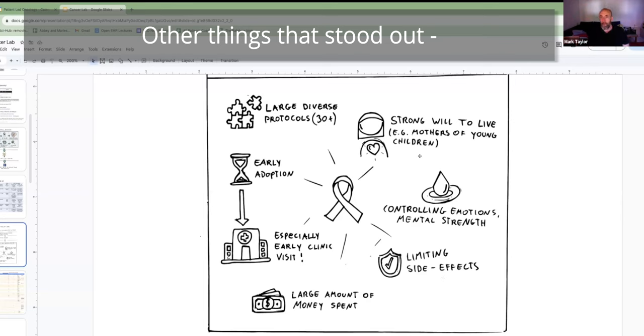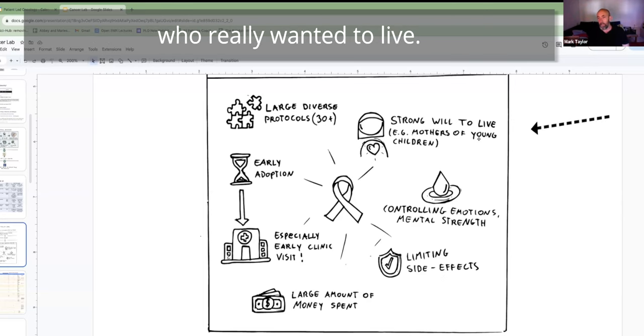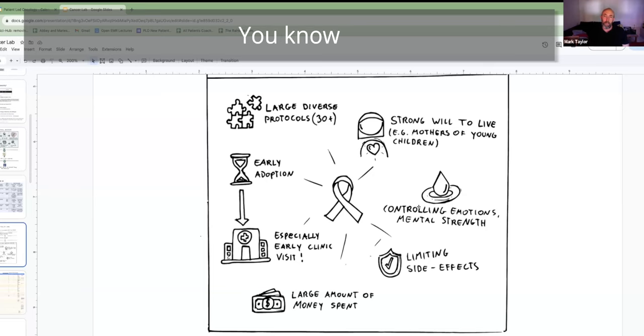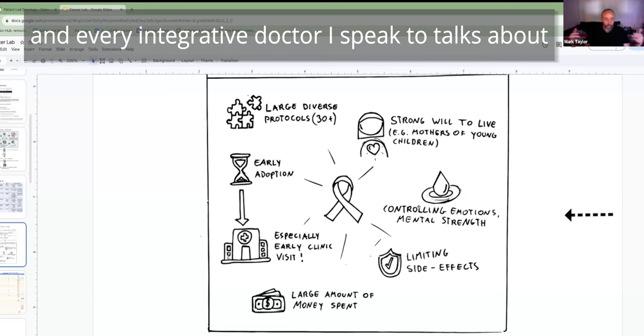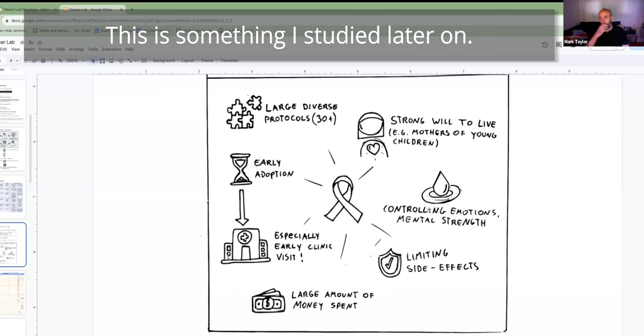Other things that stood out: there was a clear correlation of people who really wanted to live, particularly mothers of young children. You'd see the determination in the patients. This is very difficult with cancer, it's very evident. And every integrative doctor I speak to talks about the apparent impact of someone's emotions on their outcomes. This is something I studied later on.